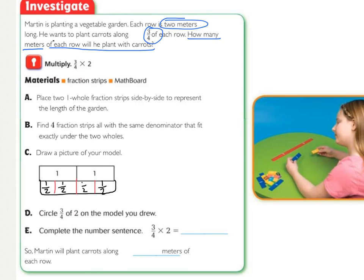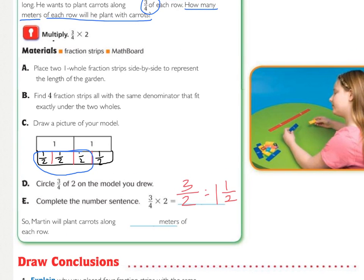So now that we have those labeled based on 1 whole, we need to circle 3 fourths of 2. So now we're going to look back at the whole piece, and we need to circle 3 of the 4 that we drew. So there's 3 of the 4, and so how many did we circle? We need to complete our number sentence. So 3 fourths times 2, well we circled 3, and they're halves, 3 halves, and that reduces into the mixed number. Well, you can go how many 2's are in 3, there's 1, and then you would have 1 left over keeping the same denominator. So 1 and 1 half. So Martin will plant carrots along 1 and 1 half meters of each row.